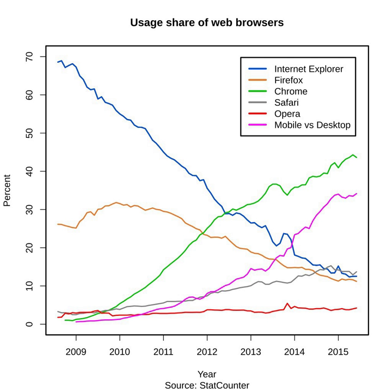The following tables compare general and technical information for a number of web browsers. General information covers basic details about the browsers: creator, company, license, price, etc. Browsers listed on a light purple background are discontinued.